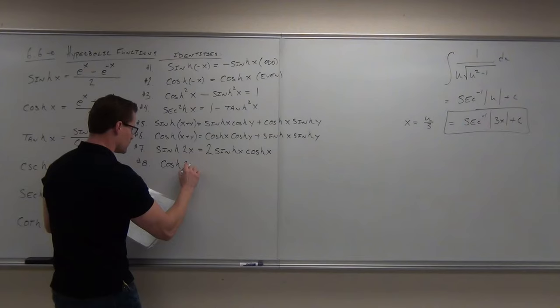We already did tanh. If we do hyperbolic tangent, its derivative is hyperbolic secant squared. Which means the integral of hyperbolic secant squared is hyperbolic tangent plus C.